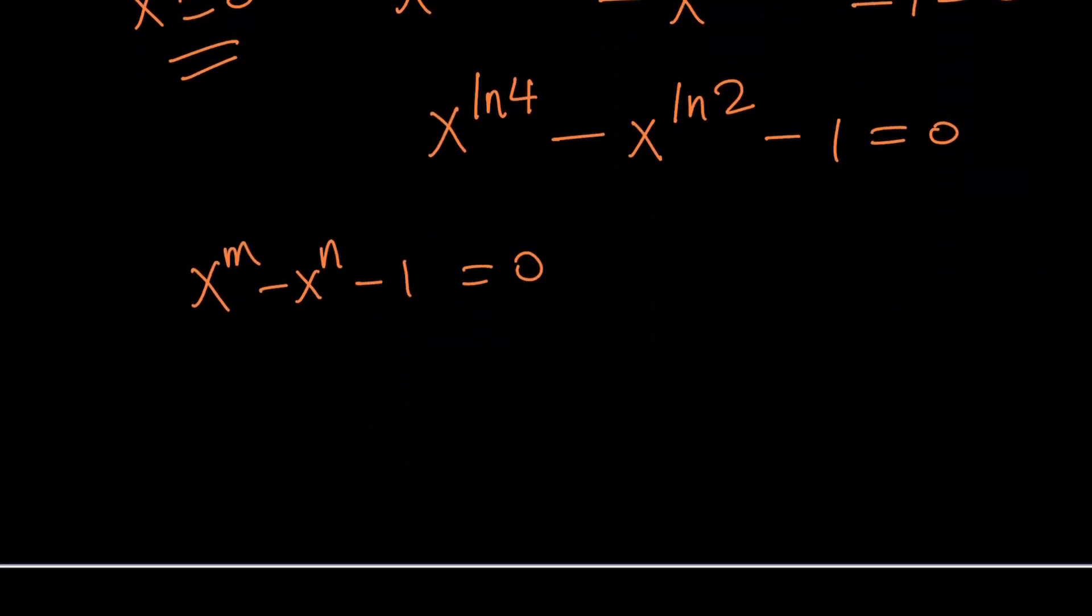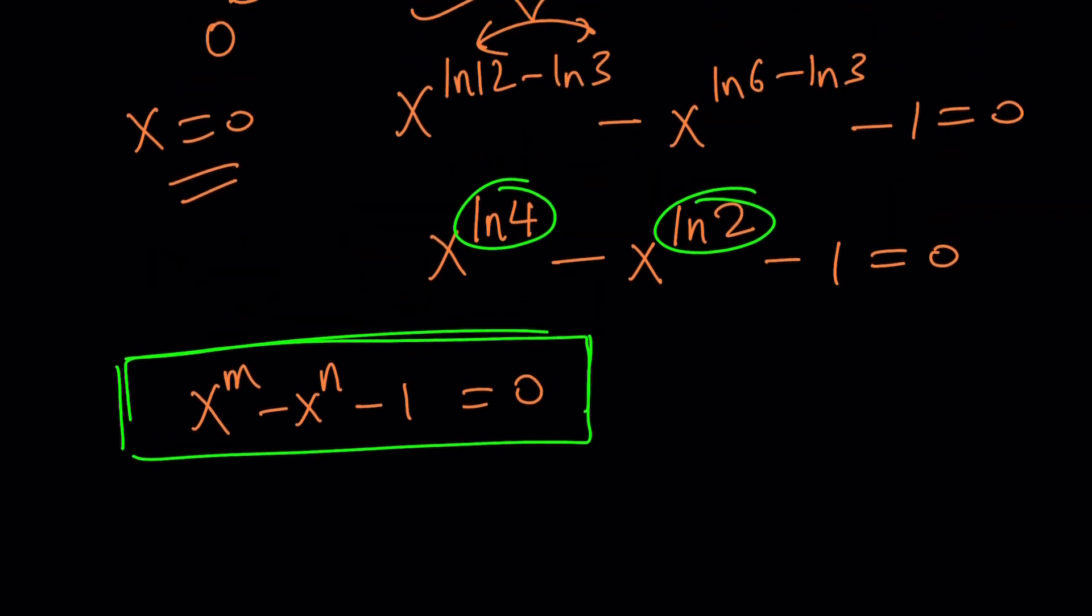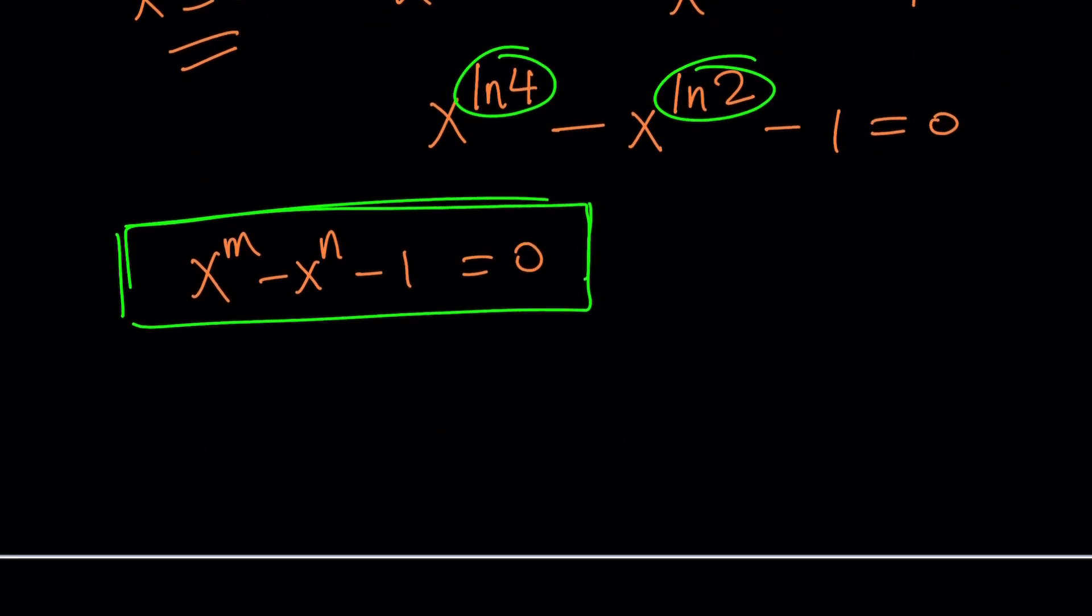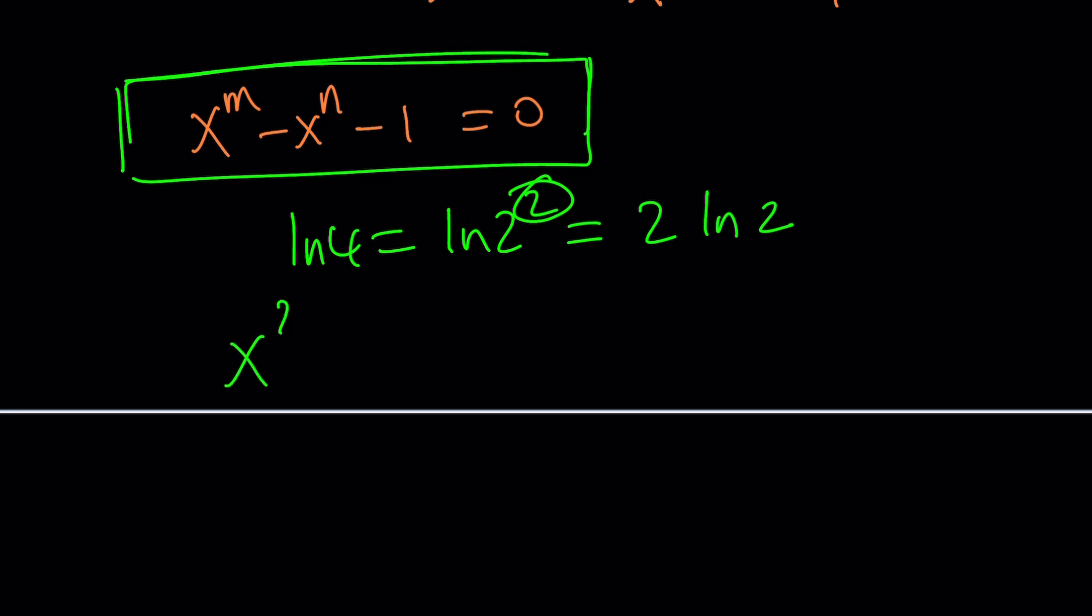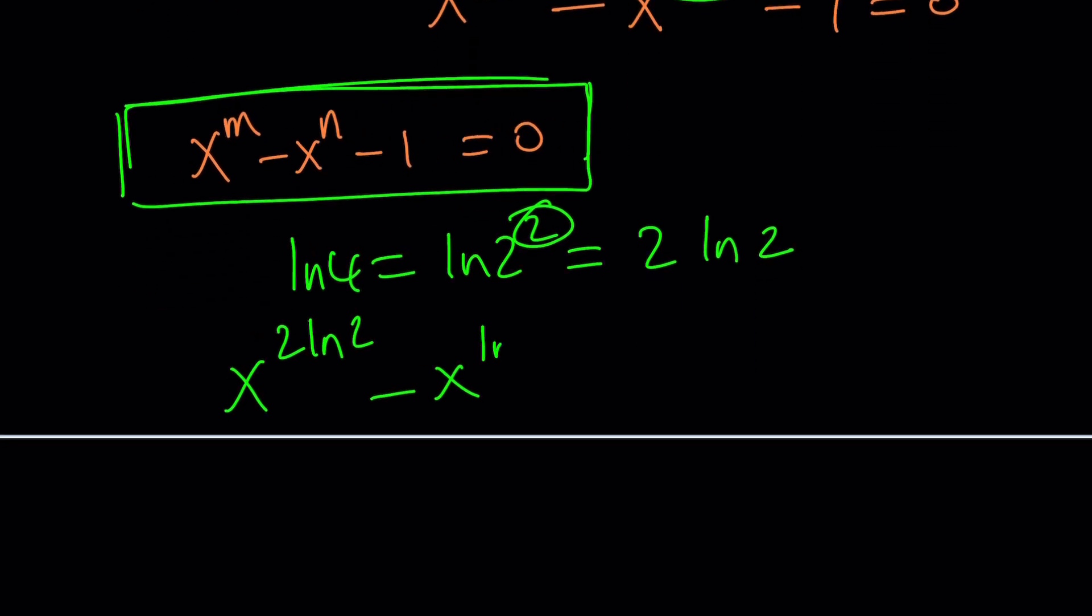So now, but here's the thing. m and n are related. They're totally related. How? ln4 and ln2. This is the critical part. How do we associate them? Well, we can look at the fact that ln4 is ln2 squared and then properties of logarithms allow us to write this as 2ln2. So, in other words, we can write this as x to the power 2ln2 minus x to the power ln2 minus 1 equals 0.